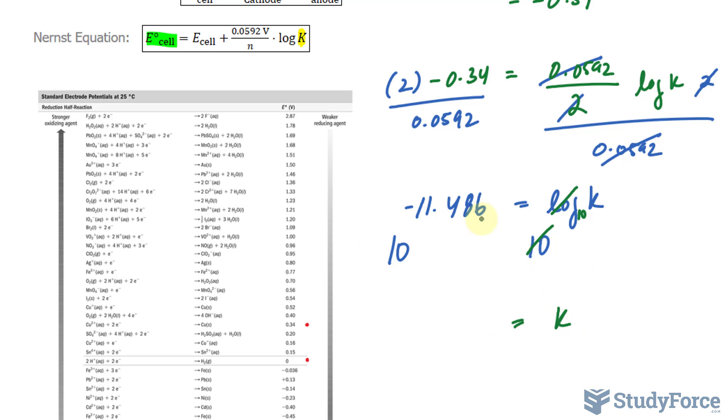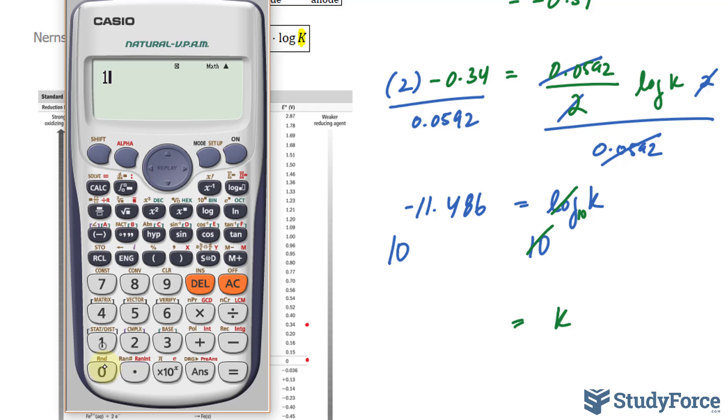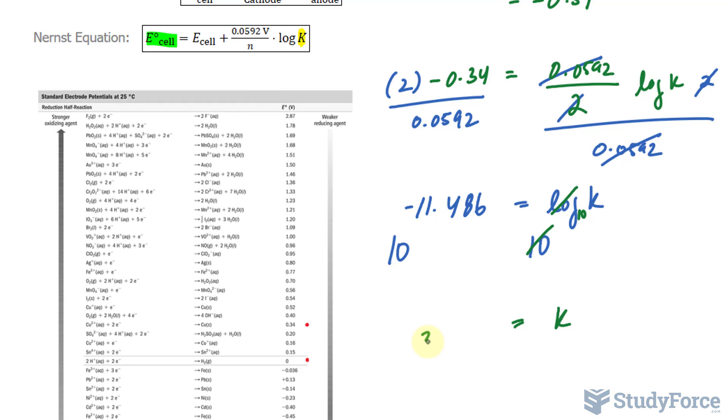Leaving you with K is equal to the left side. 10 to the power of what we just found. We need this to two significant figures, so we get 3.3 times 10 raised to the power of negative 12.